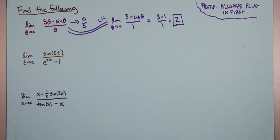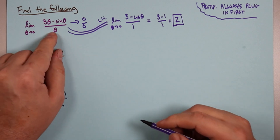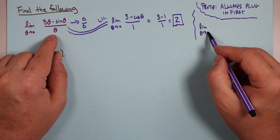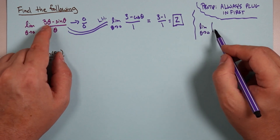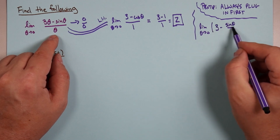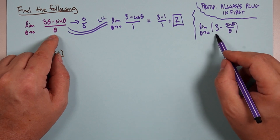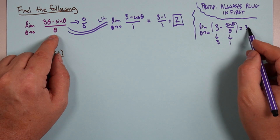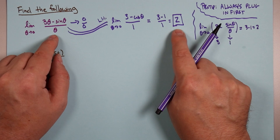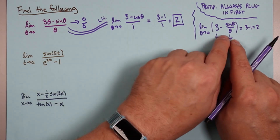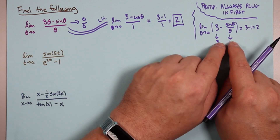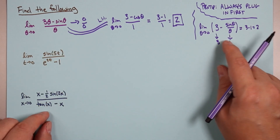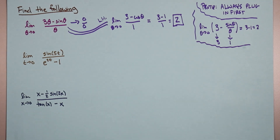We can actually check this because we've done things like this before. This is the same as the limit as theta goes to zero, broken into two pieces: 3 theta over theta is 3, and sine theta over theta. Three goes to 3, and sine theta over theta goes to 1. So this goes to 3 minus 1, which is 2. Why use L'Hôpital when the old approach works? Because L'Hôpital does things so much simpler, and many problems we'll look at will be hopeless otherwise.